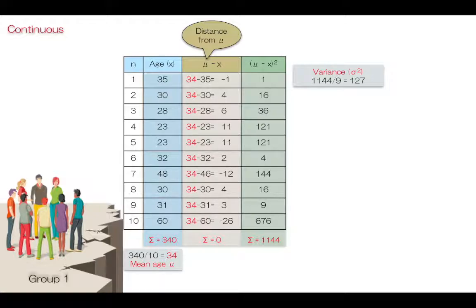Since we squared the data for variance, we can calculate the square root for the variance. Here the calculation of the square root of 127 is 11.3.